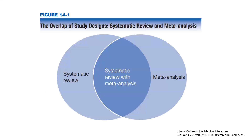A systematic review usually includes a meta-analysis within it. However, a systematic review may not always have a meta-analysis, and a meta-analysis may not always have a systematic review. If we just have a mathematical pooled estimate, that is a meta-analysis. But if it is done by way of a systematic review in terms of its methodology, then we call it a systematic review along with the meta-analysis.